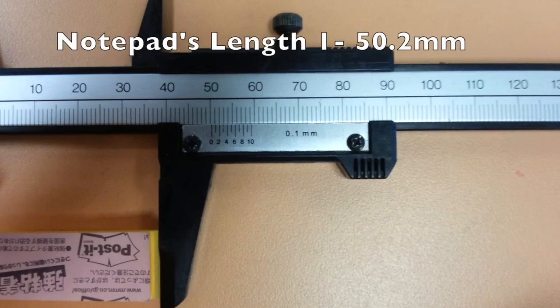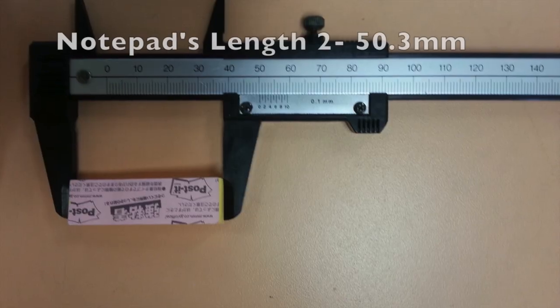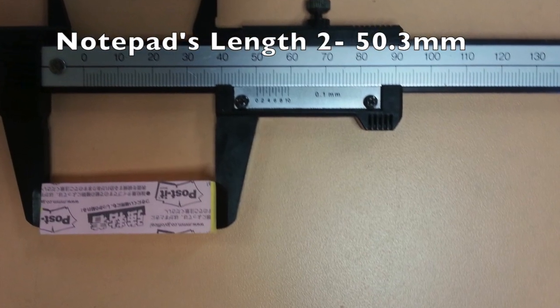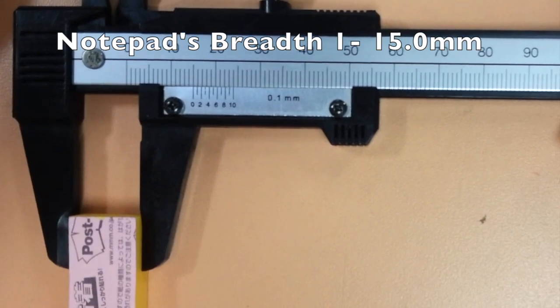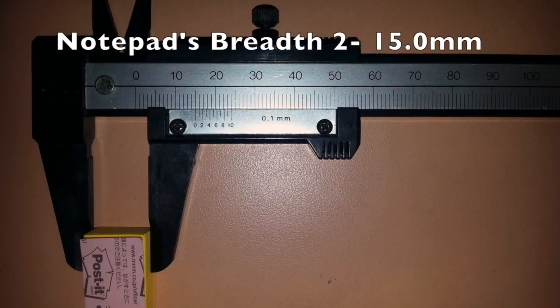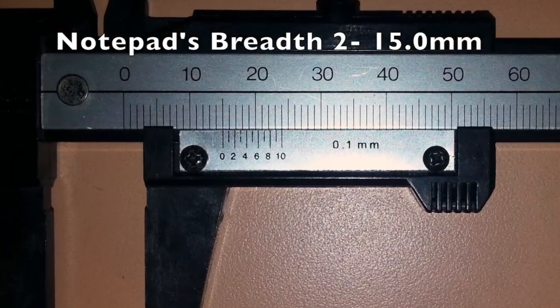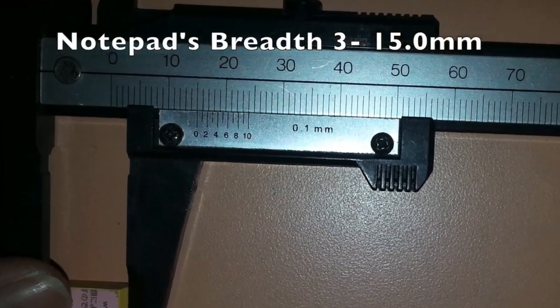We will repeat the measurements two more times at different positions to find the average length. Next, repeat the previous steps but with the notepad's breadth being measured and we will need to do it three times to find the average.